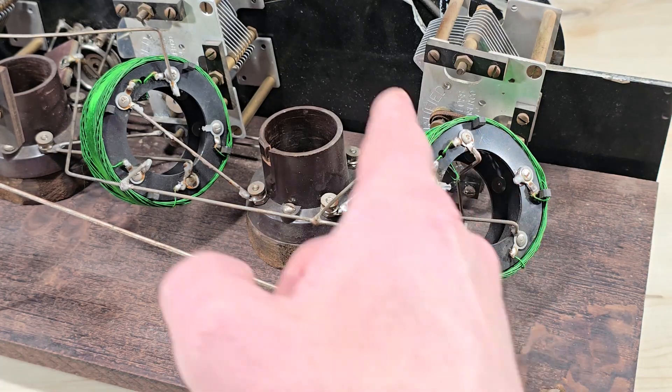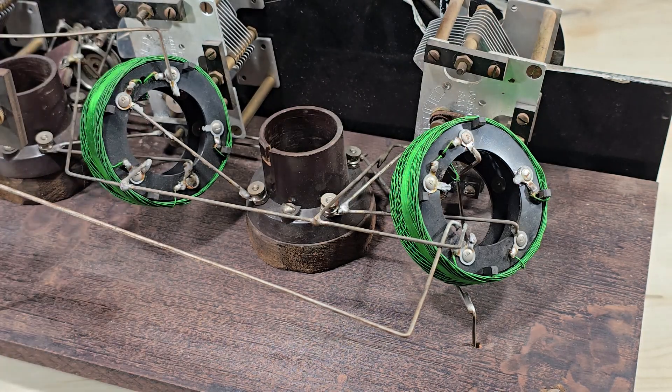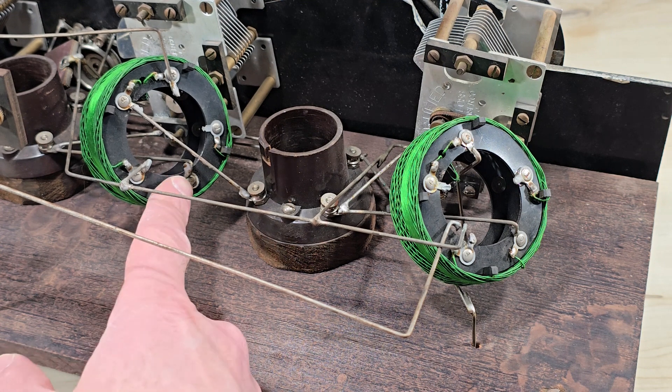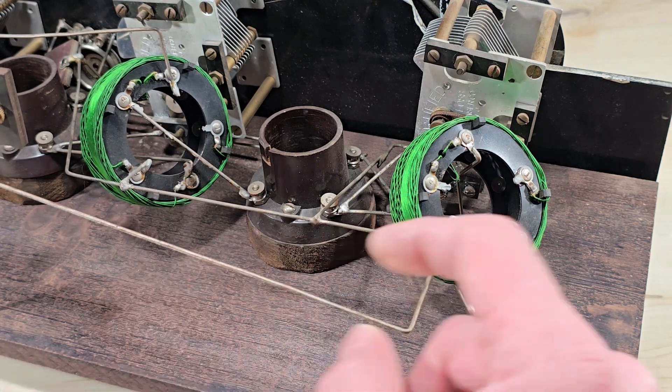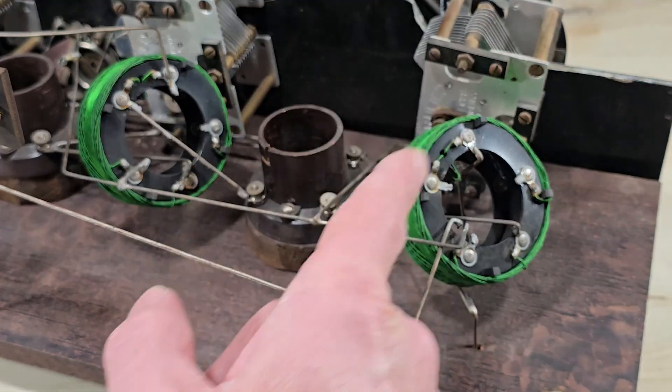And then a coil to couple the signal over to the next tube. The danger is that the energy from this coil here can be coupled back to this coil, in which case we would create a self-sustained oscillation.